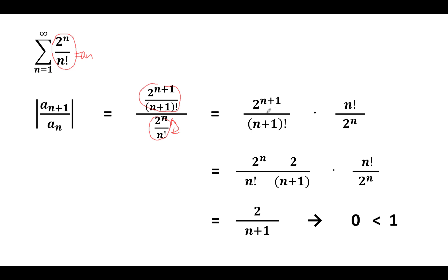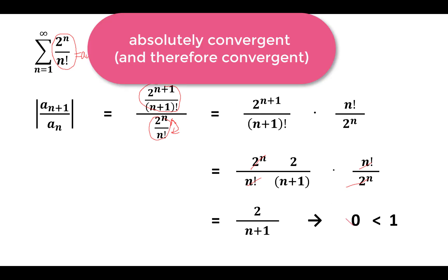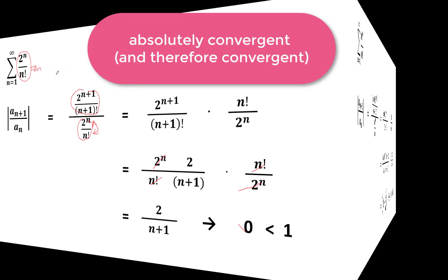When we expand this out, we get this product. Now we have cancellation: the two n's cancel and the n factorials cancel as well. We're left with 2 divided by (n+1). The limit of this quantity when n goes to infinity is 0, which is less than 1. So by the ratio test, this series is absolutely convergent, and therefore convergent.